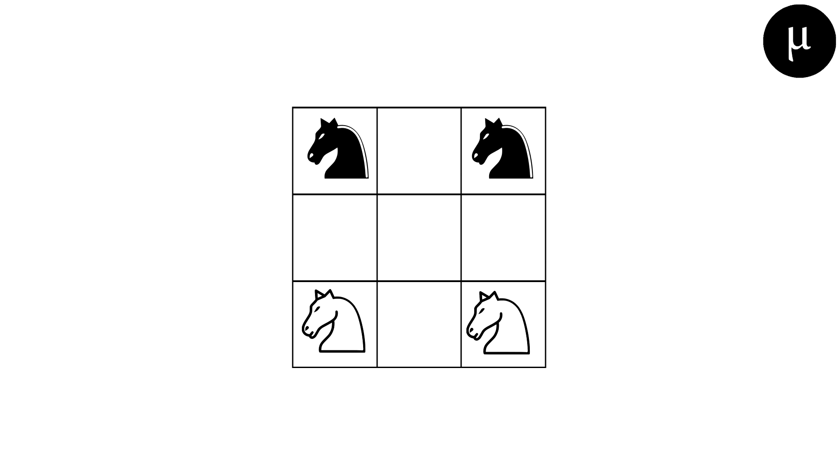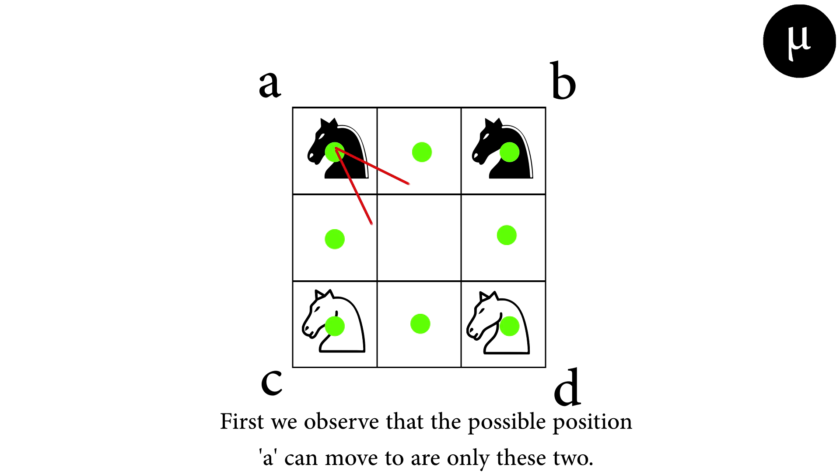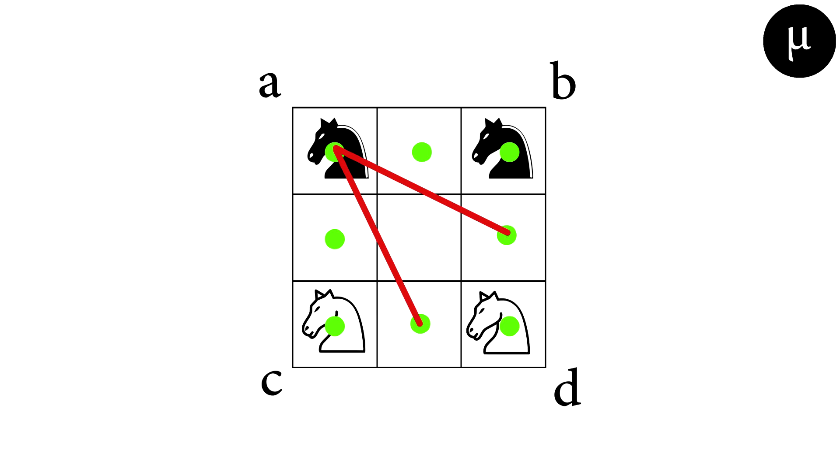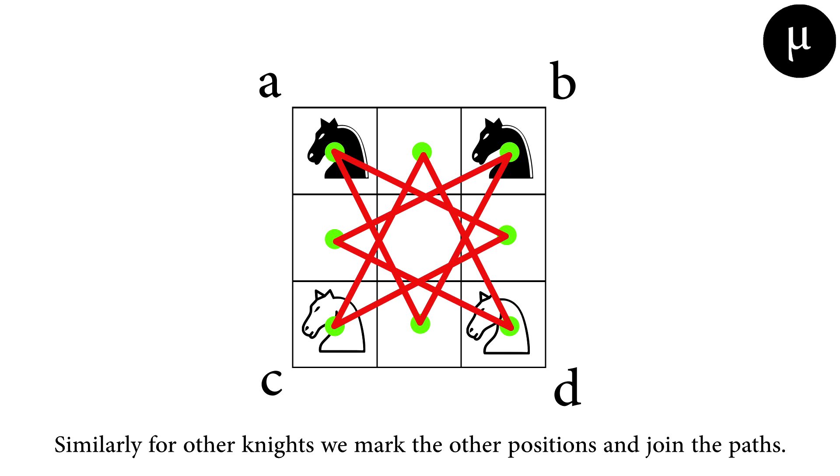Let us see how to solve this puzzle. Let us mark the knights' positions as A, B, C, and D. First we observe that the possible positions A can move to are only these two. From there, the next positions it can move to are either B or C. Similarly for other knights, we mark the other positions they can move to and join the paths.